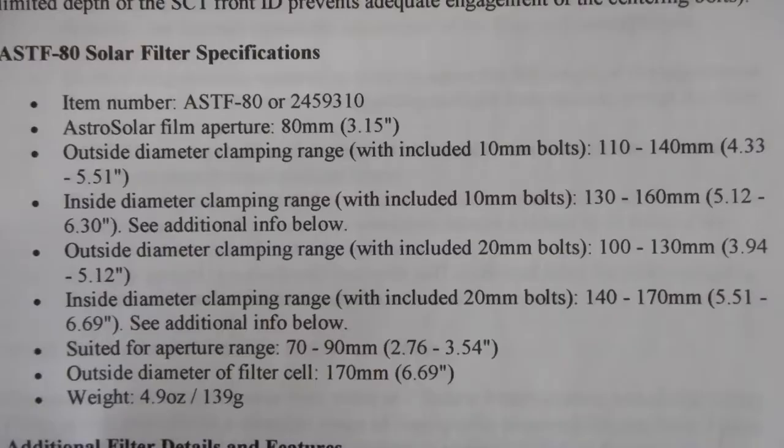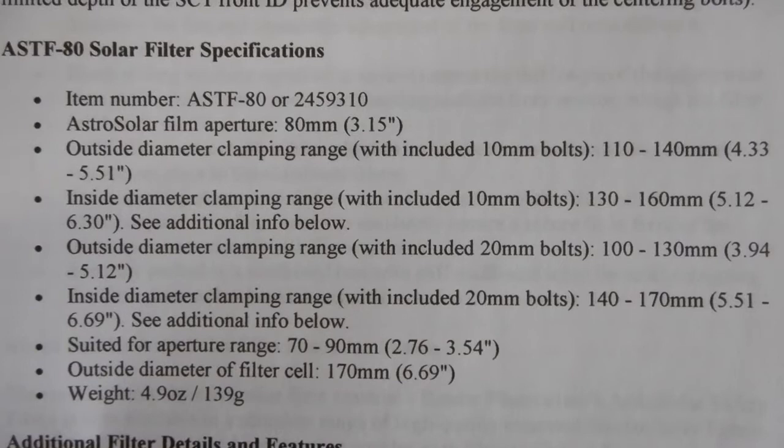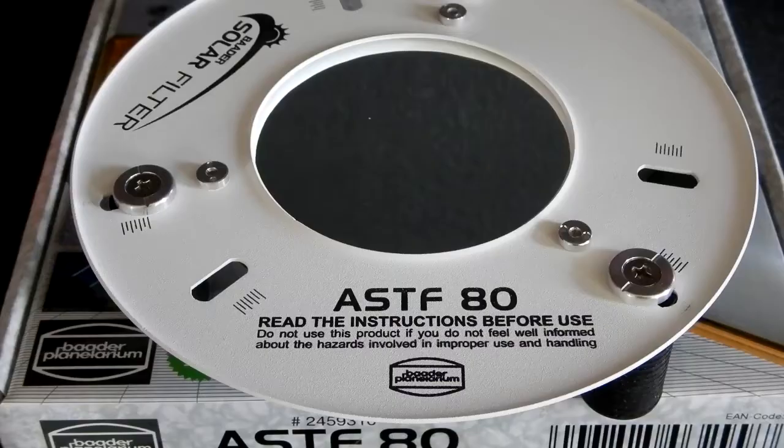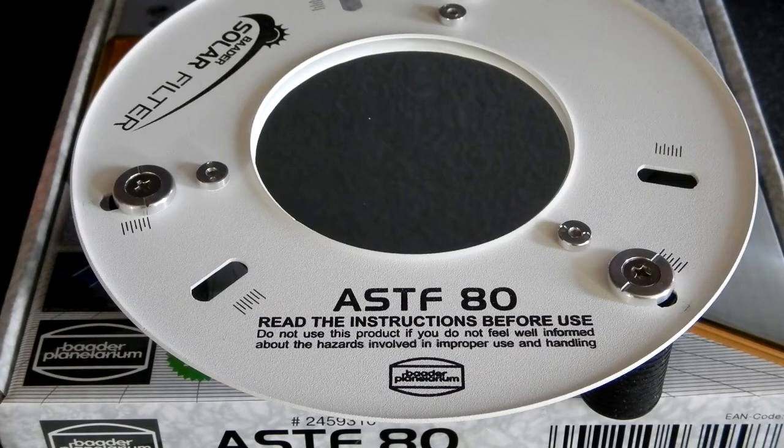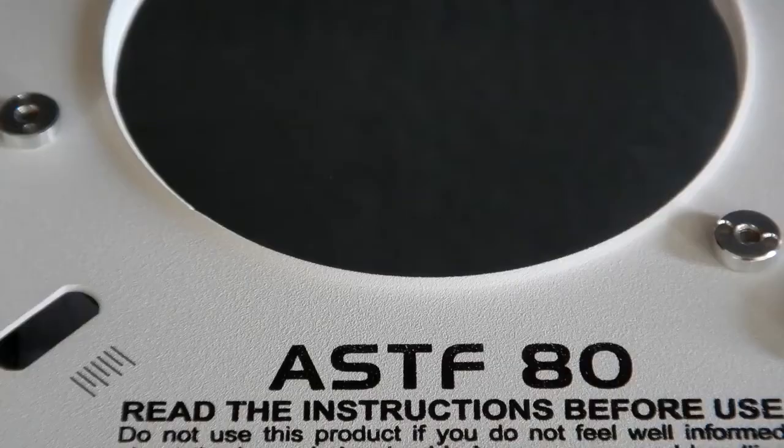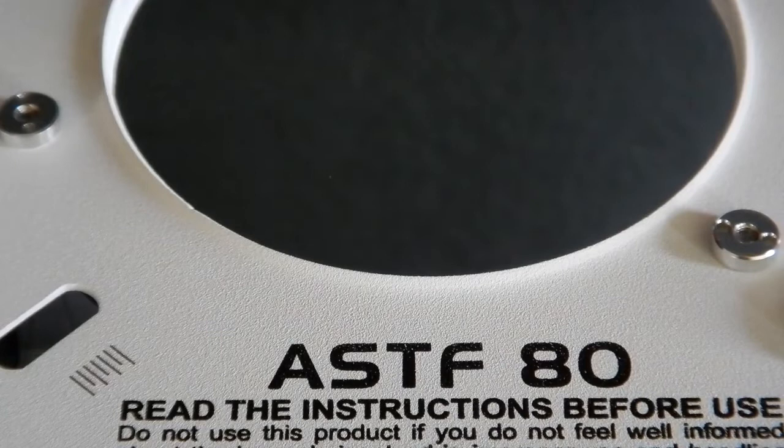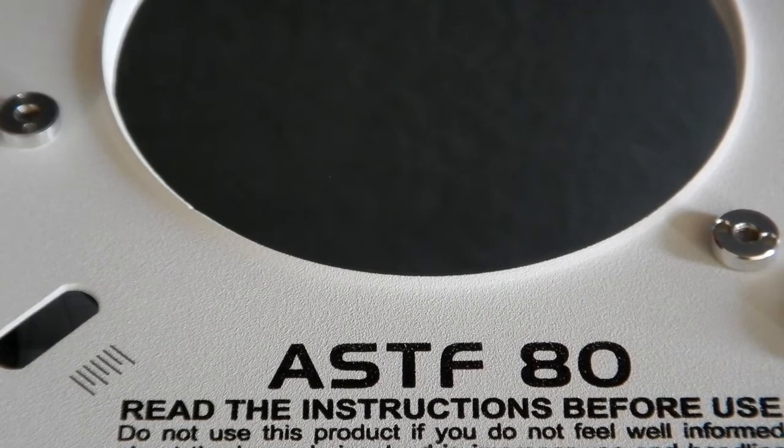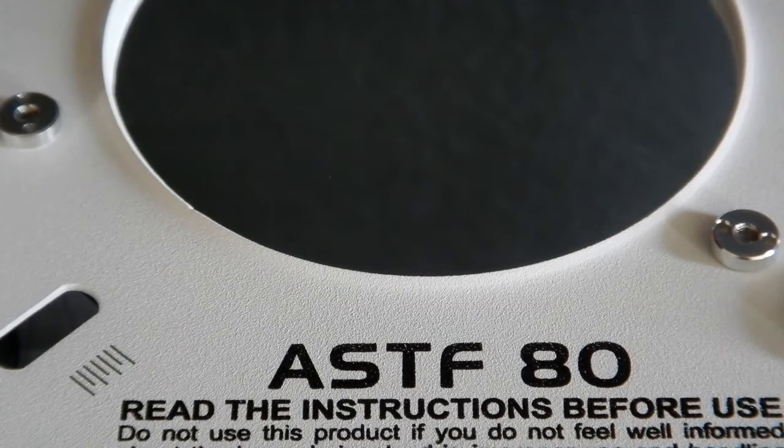Here you see some of the specifications for that filter. I bought this specifically to use with my Astro-Physics 92 millimeter Stowaway f/6.65 refractor telescope. By reducing the aperture of the 92 millimeter f/6.65 to 80 millimeters, we change the effective focal ratio to f/7.6 if we're looking to take pictures of the Sun.